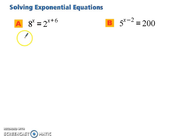Well, 8 is the same as saying 2 to the 3rd power. So now we have 2 to the 3rd power to the x equals 2 to the x plus 6. A power to a power, you multiply. So this one is the same as saying 2 to the 3x equals 2 to the x plus 6.